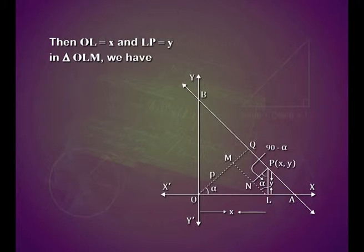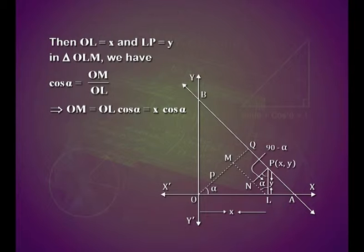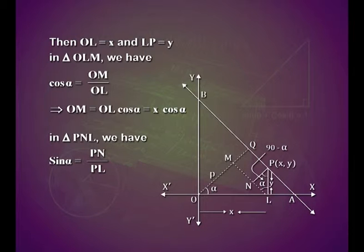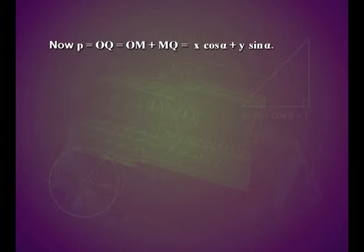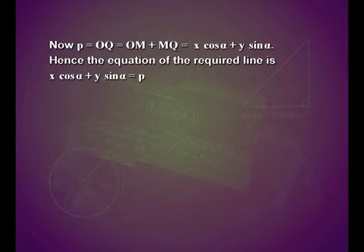In triangle OLM, cos α equals OM upon OL, so OM equals OL times cos α, that is x cos α. In triangle PNL, sin α equals PN upon PL, so PN equals PL times sin α, that is y sin α. MQ equals PN equals y sin α. Therefore p equals OQ equals OM plus MQ equals x cos α plus y sin α. Hence the equation of the required line is x cos α plus y sin α equals p.